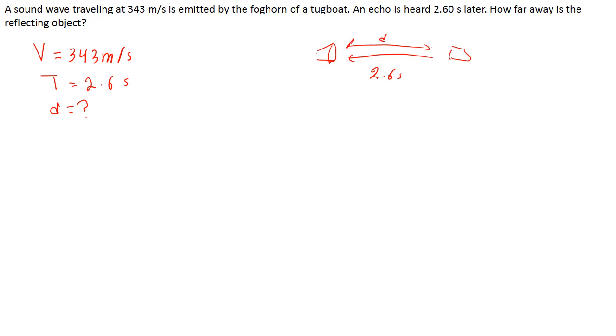Which is this one from this point to this point. If we apply the wave speed formula v equals lambda over t, we will get 343 equals lambda, which is an unknown, over t which is 2.6 seconds. Calculating, we will get...